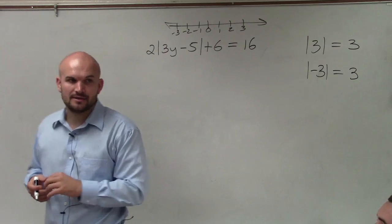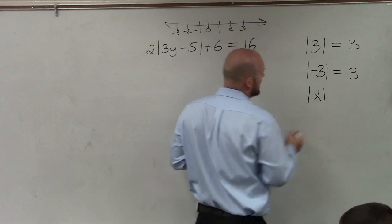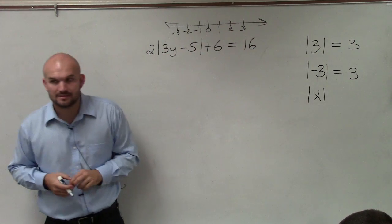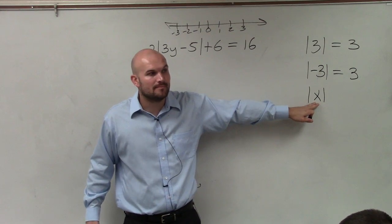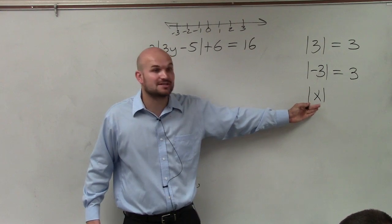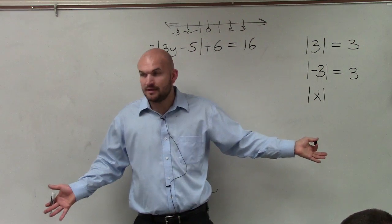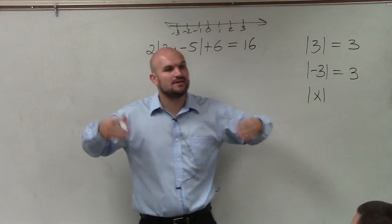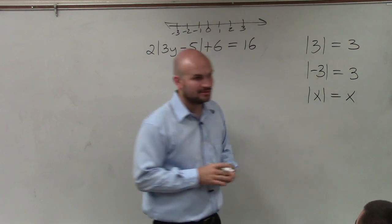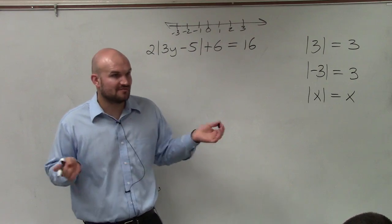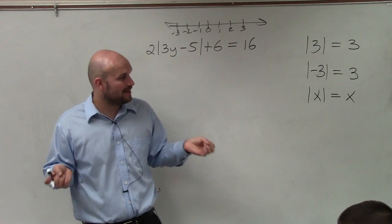What's important about this — if I say the absolute value of x, that means x could be positive, and x could also be negative, because it's always going to equal x. And remember, an absolute value always has to equal a positive number. The absolute value of a variable always has to be positive.